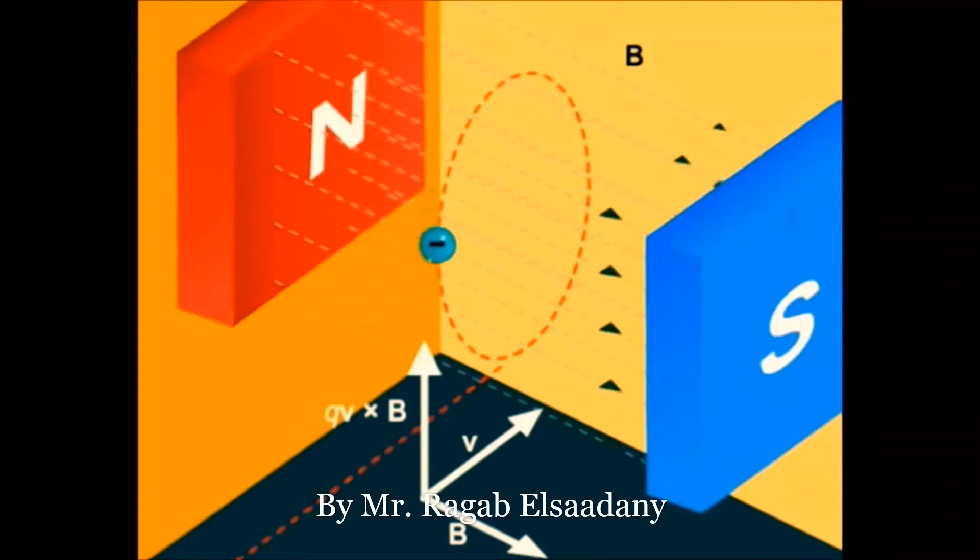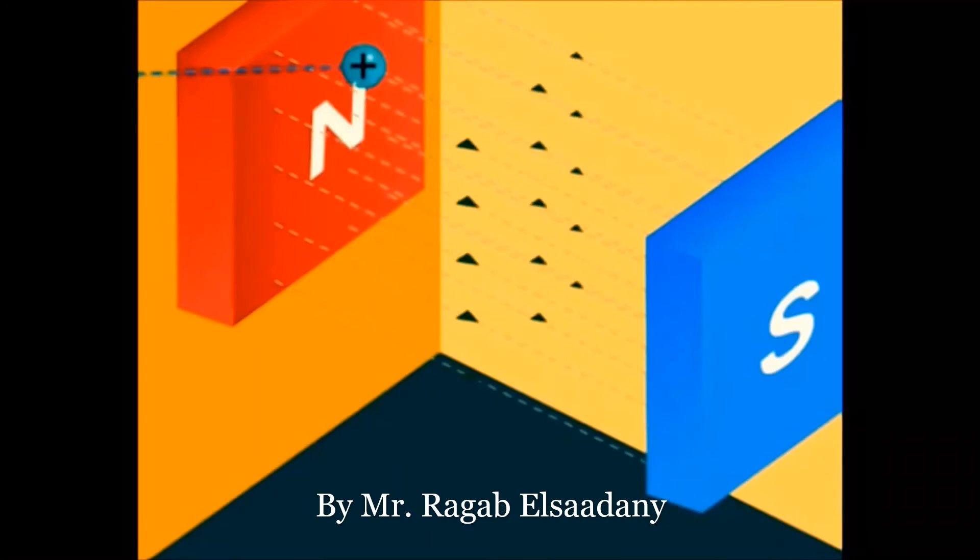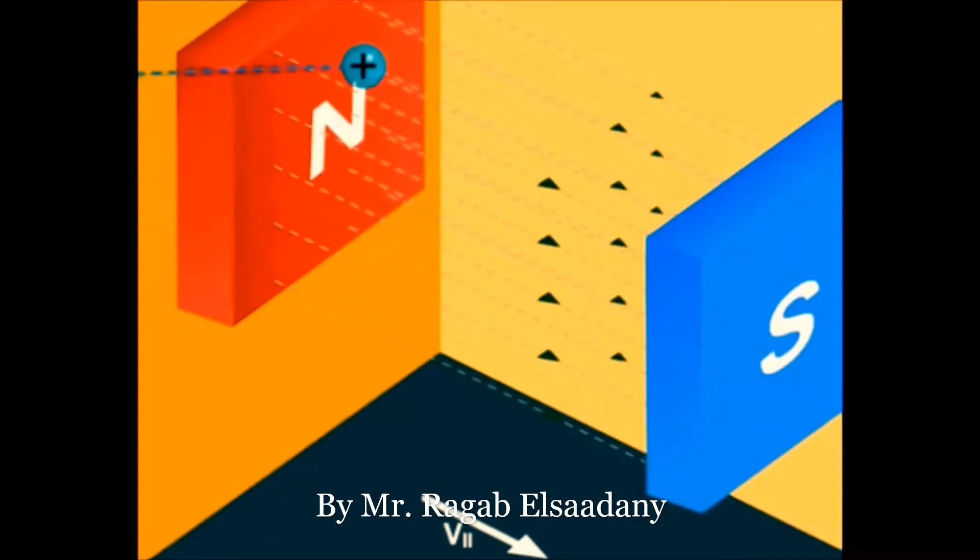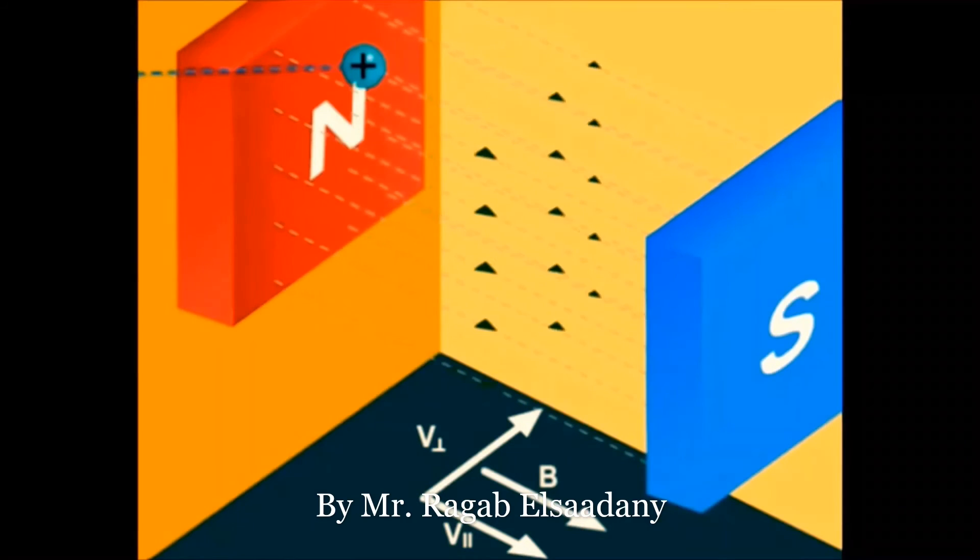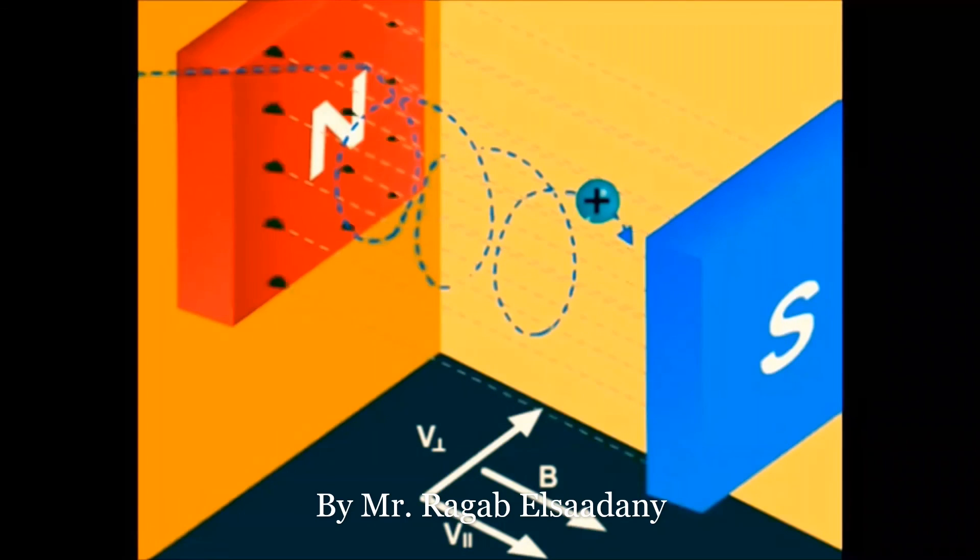If V and B are perpendicular, the charge will move in circular motion. Now let's consider when B and V are not perpendicular. We have two components of velocity: one parallel to B and the other perpendicular to B. The parallel component causes linear motion and the perpendicular component causes circular motion, resulting in spiral movement.